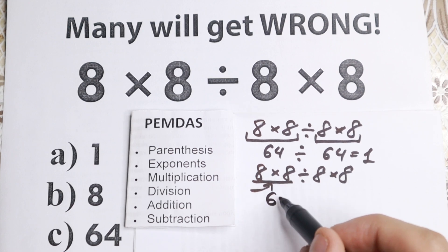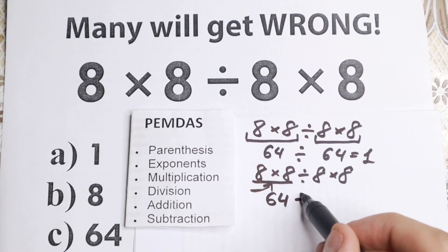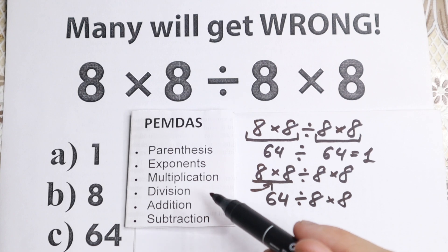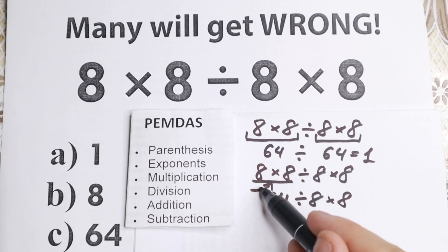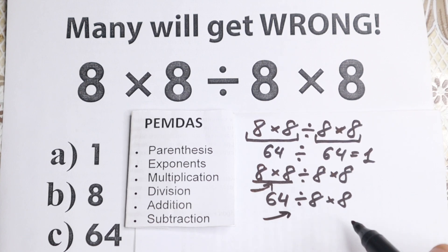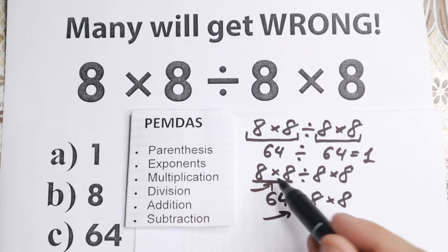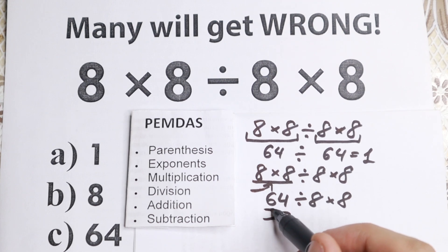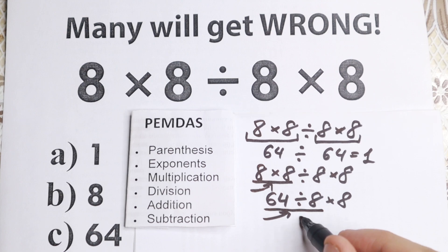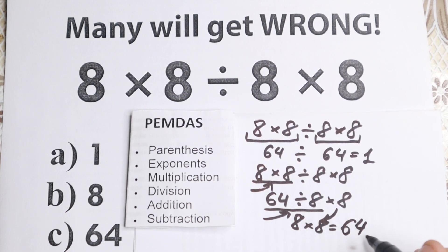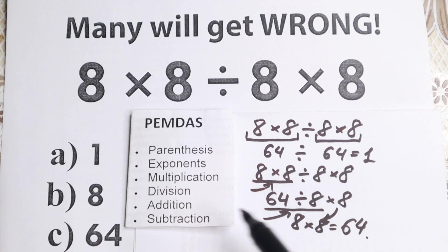8 times 8 equals 64. So now we have 64 divided by 8 and times 8. Let's continue solving according to PEMDAS. What is the first sign from left to right now? We still have division and multiplication, but now the first sign from left to right is division. So we do 64 divided by 8, which equals 8. And from the end we still have times 8. So 8 times 8 equals 64.